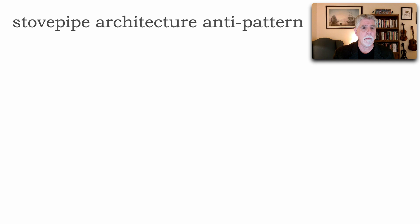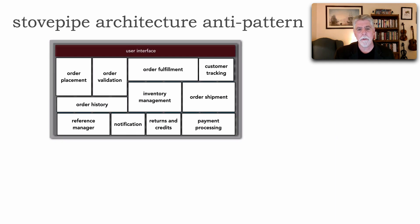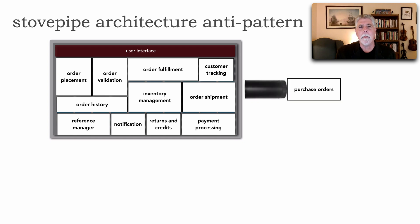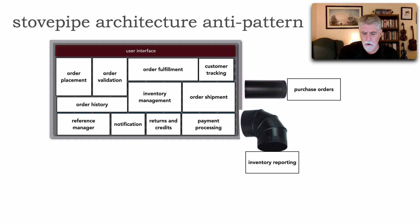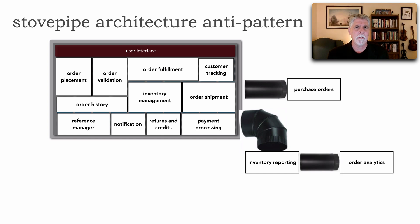Let's look at a very common example with monolithic applications. You start with a well-formed architecture with great intentions that works fine — until changes start to occur. When we want to manage purchase orders, we bolt it on to the monolithic application. Then for more sophisticated inventory reporting, we bolt on another Stovepipe fitting. Then there's ML/AI: we take reporting feeds and do order analytics to better determine demographics — hence another Stovepipe fitting.